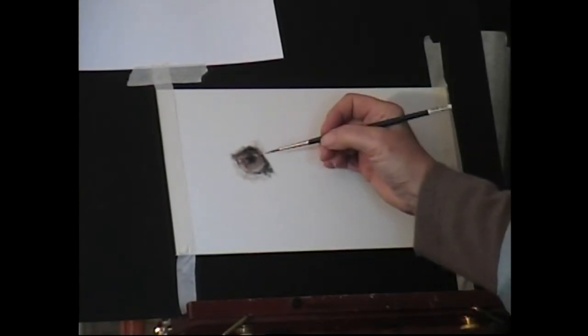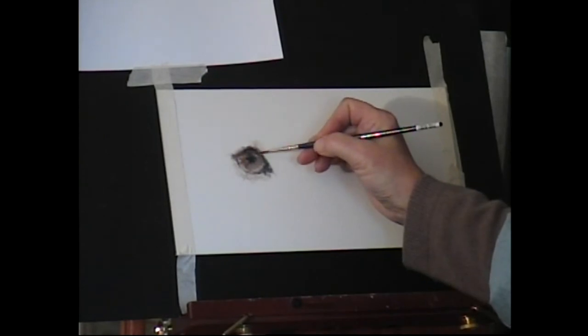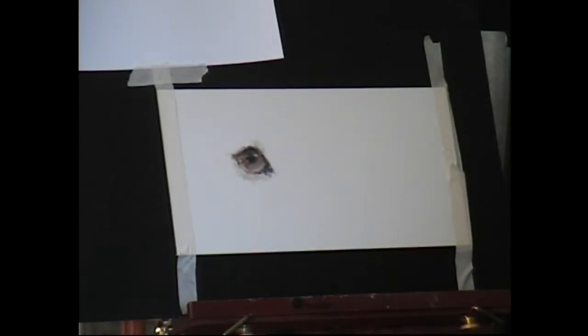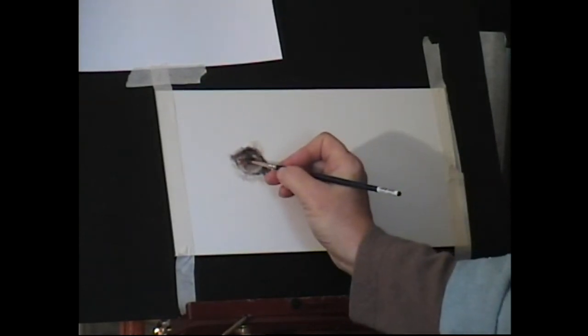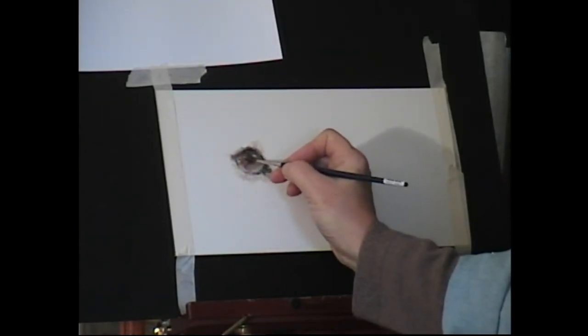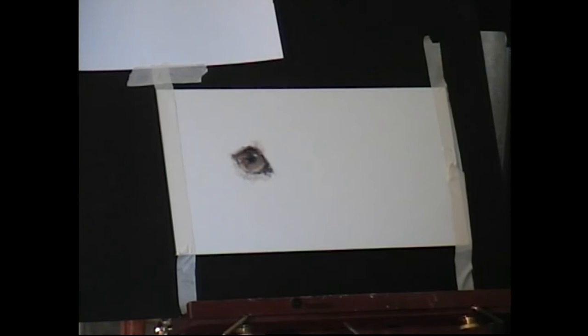Now, what I'm going to do is use a bit of a wipeout technique on this. I'm going to dip into just some turpenoid natural, and I'm going to start taking out some of the color.